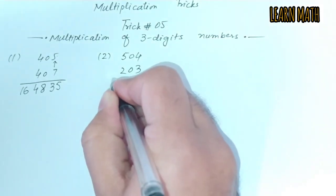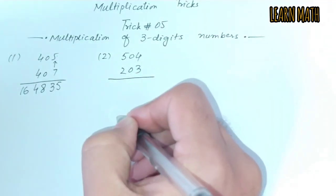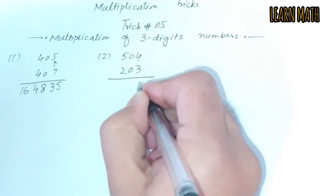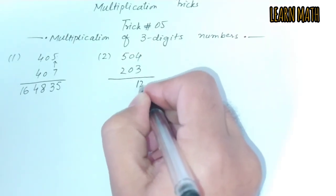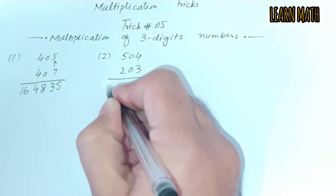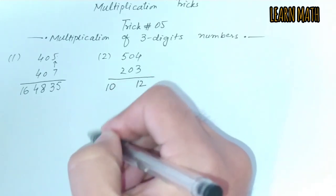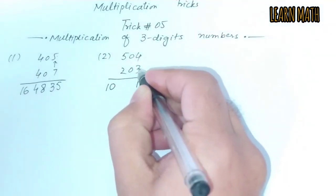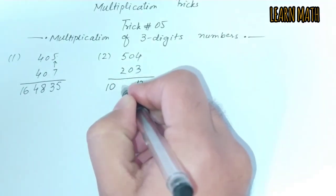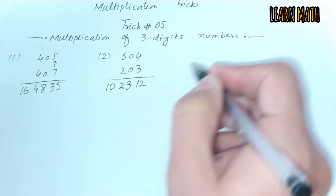First step, we will multiply 3 into 4, which is 12. Then we will multiply 2 into 5, which is 10. Then we will multiply 5 into 3, which is 15, and 2 into 4, which is 8, and that is 23. This is the answer.